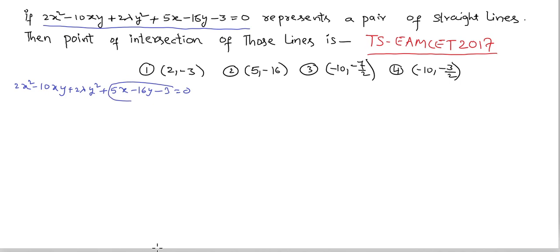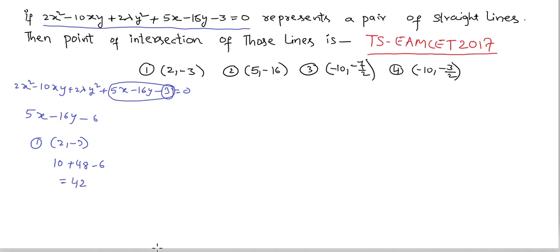Take the linear part: 5x - 16y - 3 = 0, multiplied by 2 for the constant, giving -6. Substituting the first point (2, -3): 5×2 = 10, minus 16×(-3) = +48, minus 6. That is 48 - 6 = 42, plus 10, equal to 42 — not equal to zero. First option is wrong.